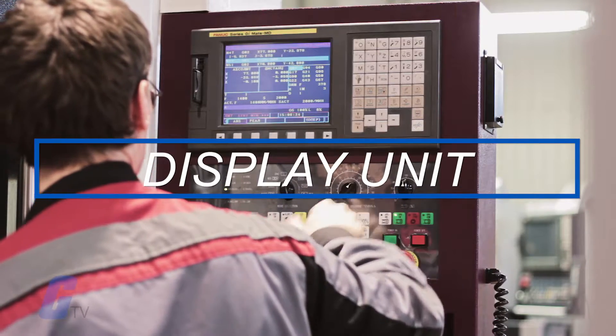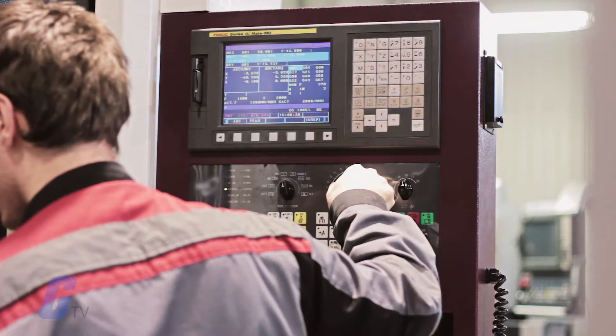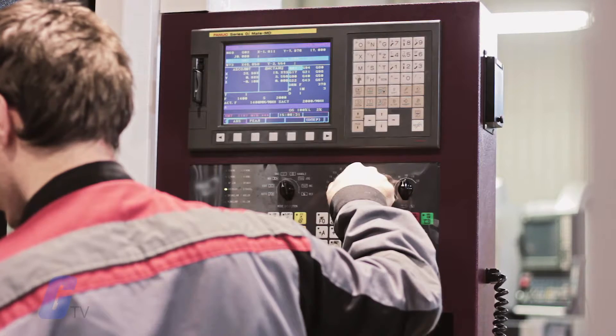The display unit is essentially used as a monitor that displays the programs, commands, and other useful data relevant to the CNC machine.